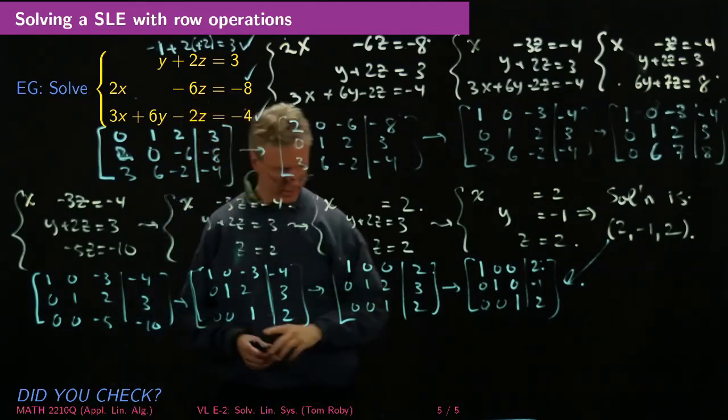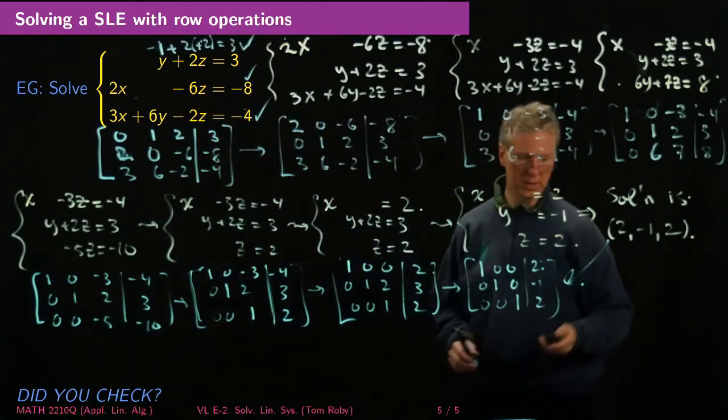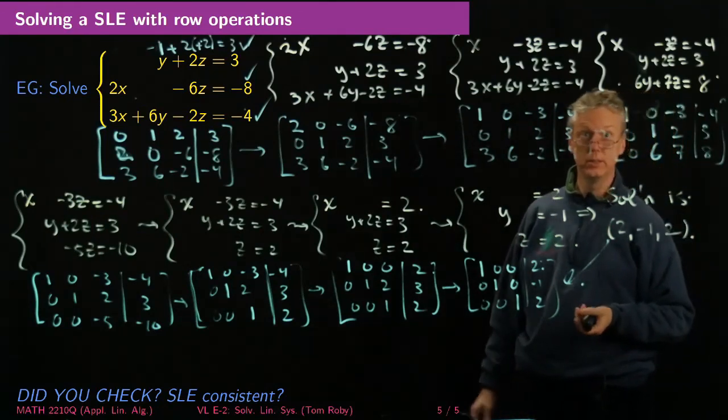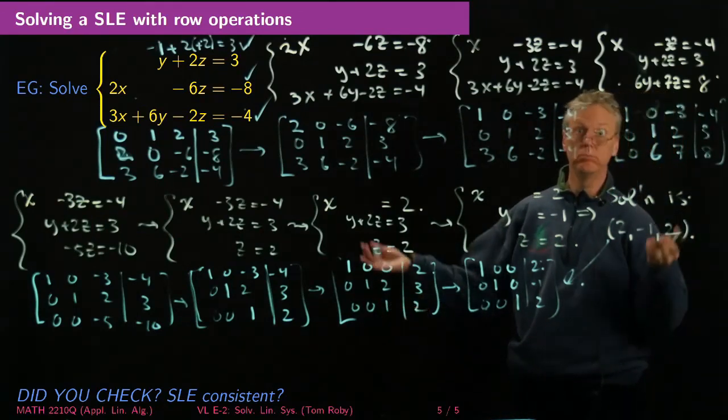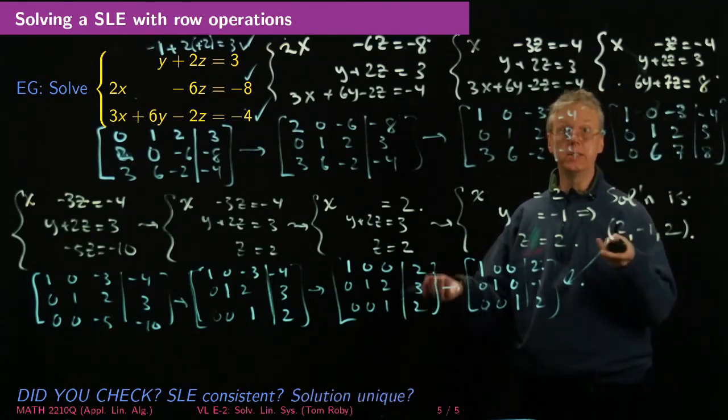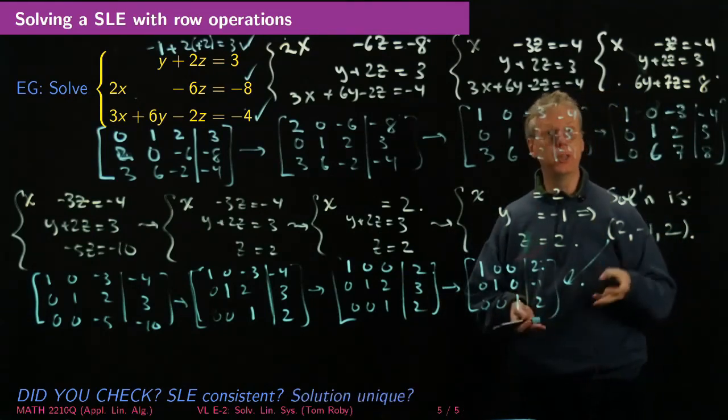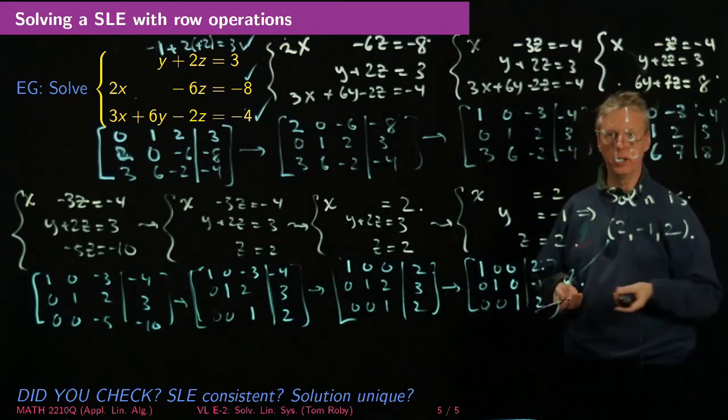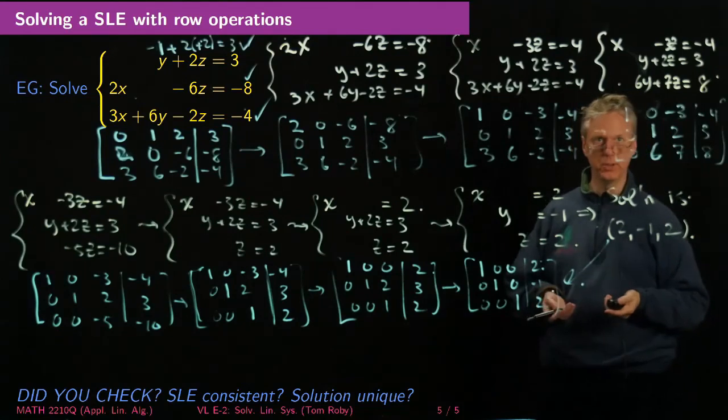And then the last questions I want to ask about any linear system is, is the system consistent? Was there a solution? Yes, at least one solution. And is the solution unique? And in this case we see that what we've done is show that there is exactly one unique solution. We'll see other examples where we don't have a unique solution, but that's all there is for this video lecture. Thank you for your attention.